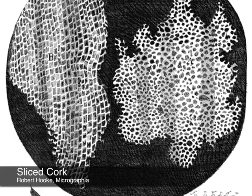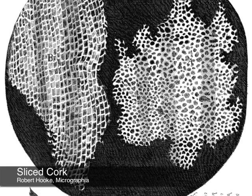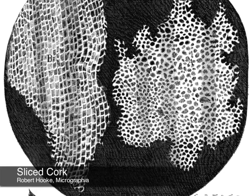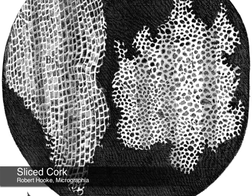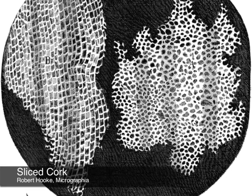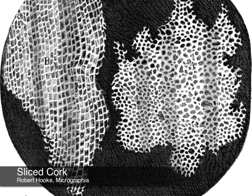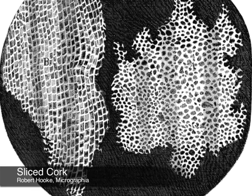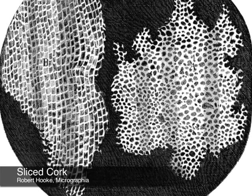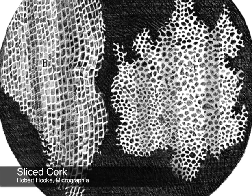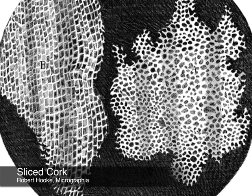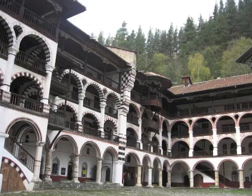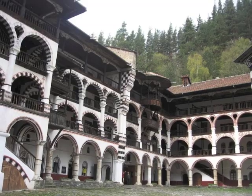Another famous drawing that Micrographia included was thin slices of cork. Hooke discovered plant cells or cell walls in cork tissue, and coined the term 'cells' from the cells in a monastery.